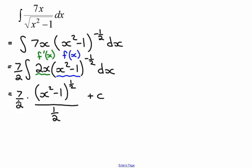Make it a bit prettier. 7 over 2 divided by 1 half is the same as 7 over 2 times 2 which gives me 7. I don't like to leave my answers with fraction exponents. So let's rewrite that. That's 7 times x squared minus 1 rooted plus my constant of integration.